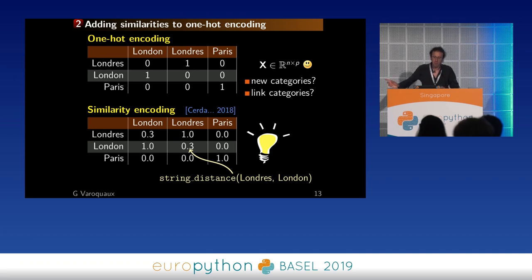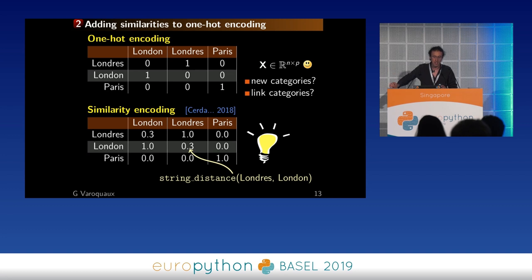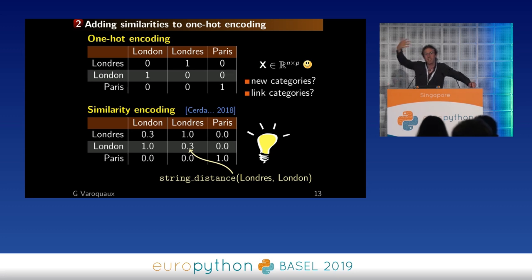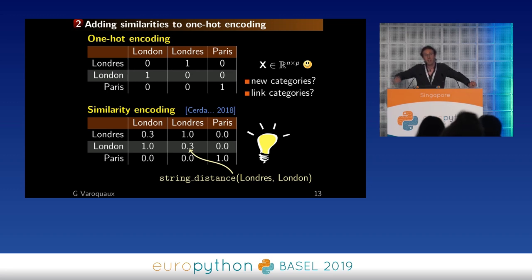The first work we did with Patricio Cerda — and this part is really his work, as he's doing a PhD in my group — was to take one-hot encoding and relax it. Instead of zeros and ones, we added string distances between the representations of the categories and encoded with string distances instead. This tackles the problem of new categories in the test set, because if there's a new category not in the train set, we can look at the string distances to the training categories. It also allows us to link categories — if there are typos, they give very small string distances and the two entries look very similar.